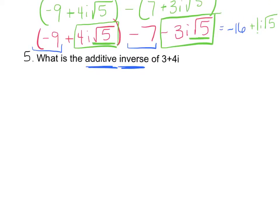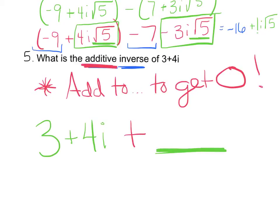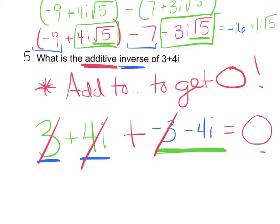Our last adding question is additive inverse. Additive inverse is what you add to something to get 0. So for 3 plus 4i, what would you add to the real number 3 to make it 0? A negative 3. And what would you add to 4i to make it 0? A negative 4i. So the additive inverse of 3 plus 4i is negative 3 minus 4i.